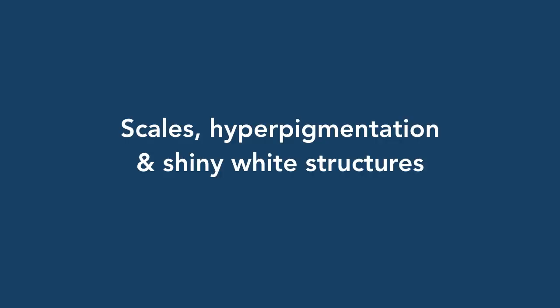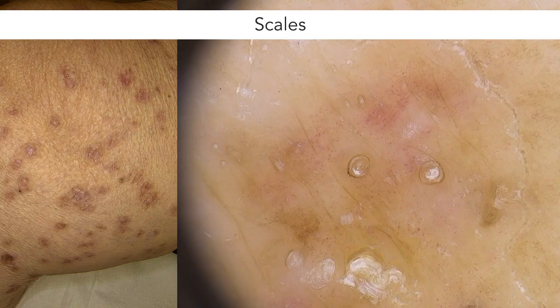Finally, let's talk about other dermoscopic features that can be found in the central area apart from vessels. These will be scales, hyperpigmentation, and shiny white structures. It's not infrequent to find white scales within the central area. In this case, we can appreciate the hyperkeratosis surrounding the follicular openings.